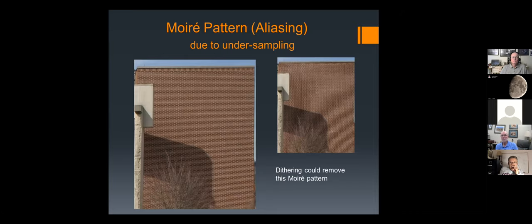Here's an example of what drizzling can do and what under-sampling is. On the right you see a Moiré pattern — this is just a brick wall, but the bricks are under-sampled. There's not enough pixel size to capture individual bricks, so it's mis-sampling them and interpreting the bricks as having some other shape and size than they really do. If we took a bunch of dithered images — shifted slightly between images by a fraction of a pixel — we could reconstruct what the brick wall actually looks like.